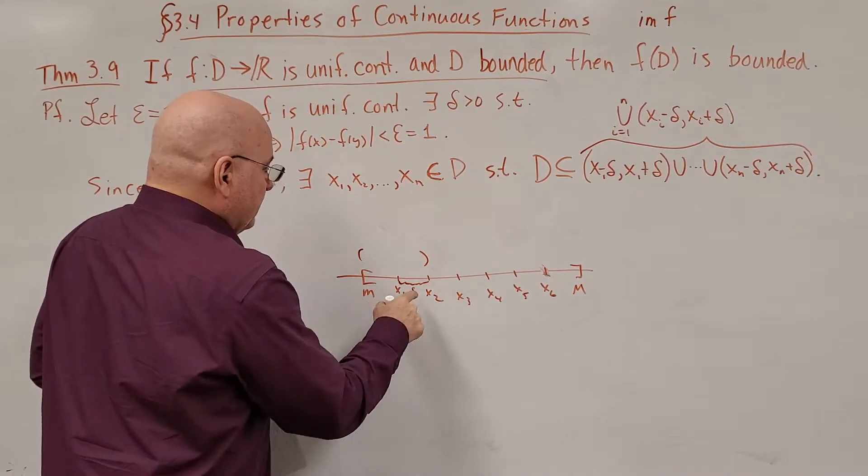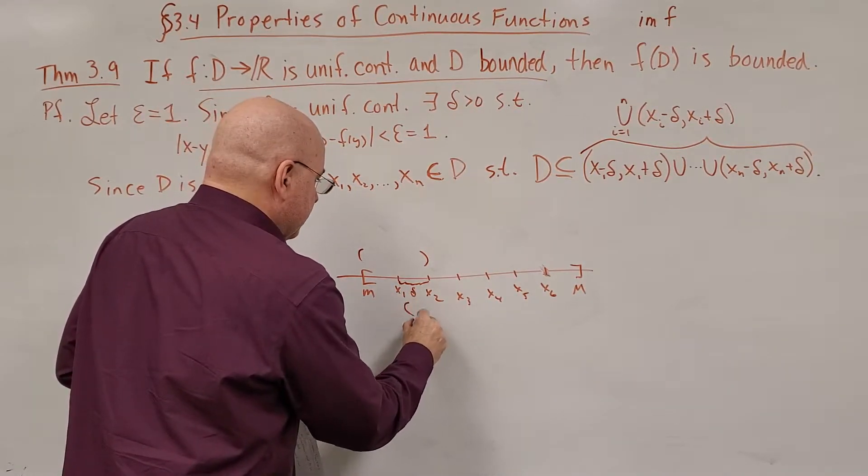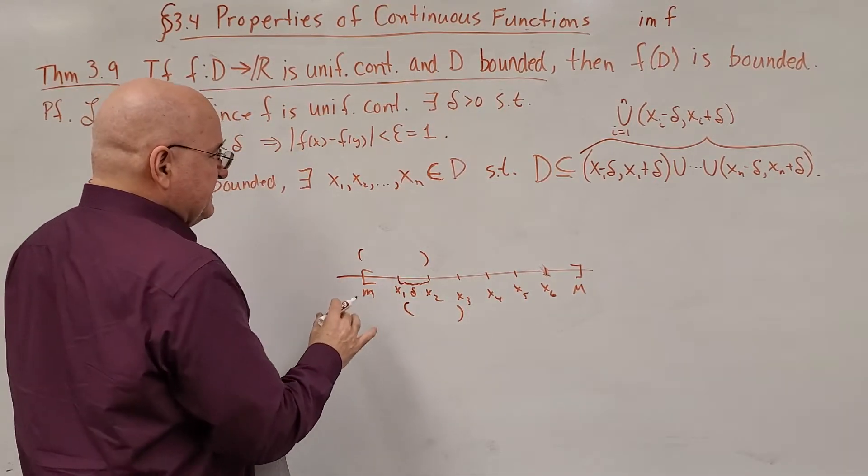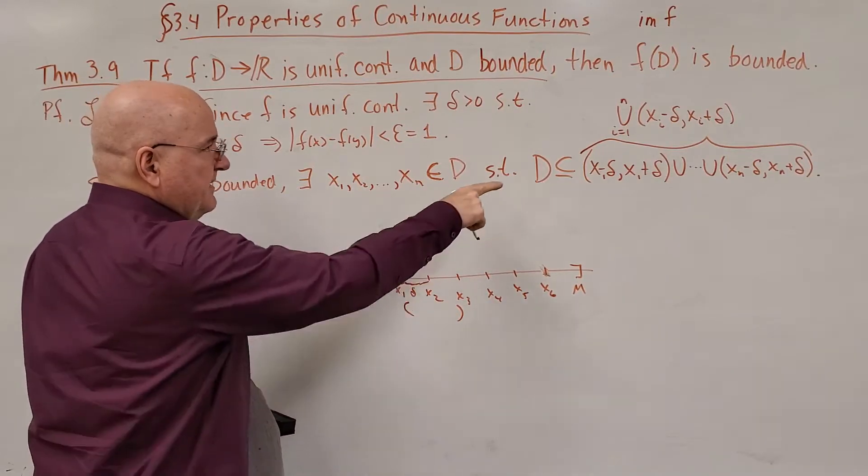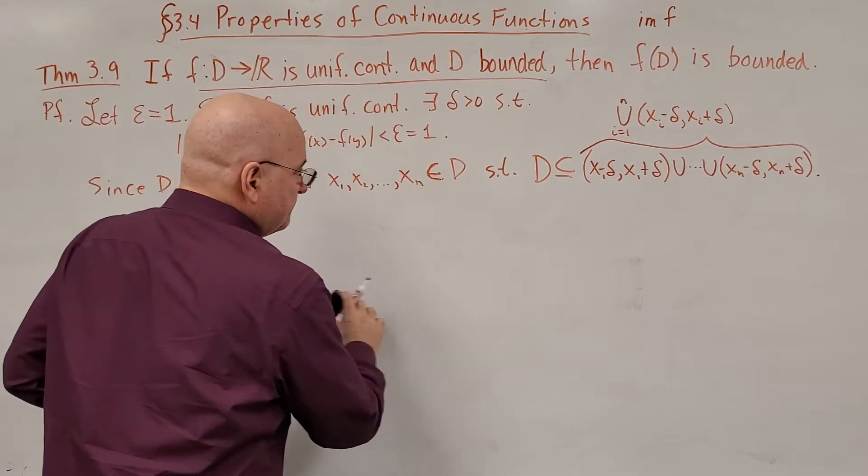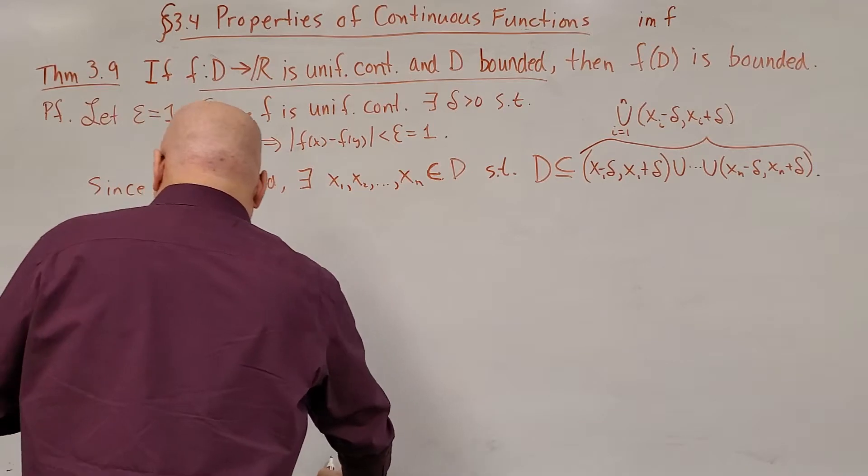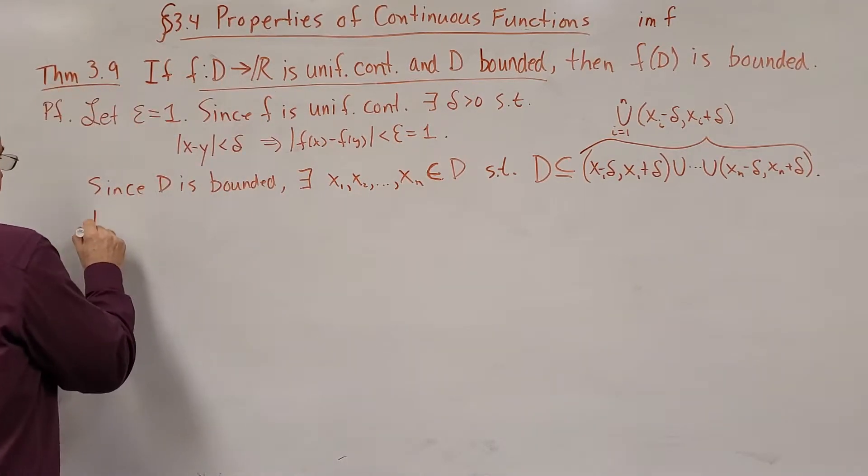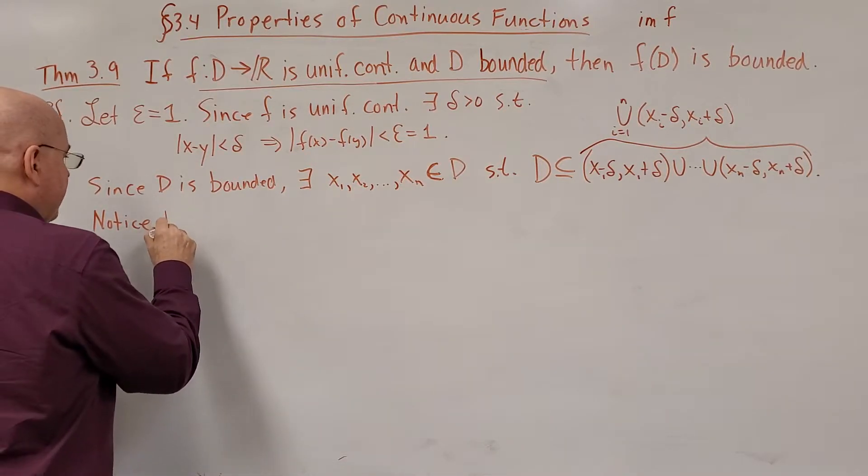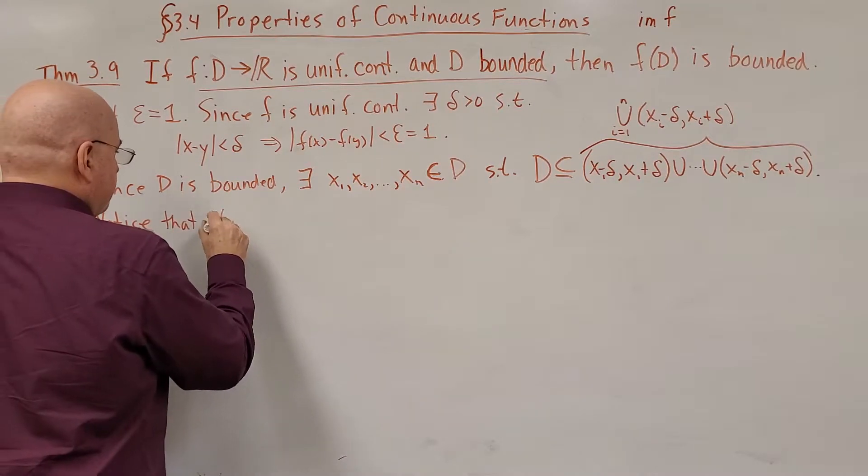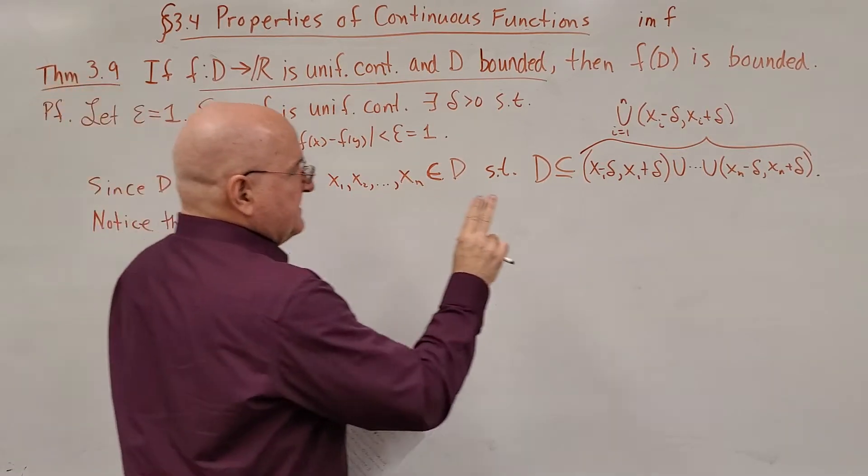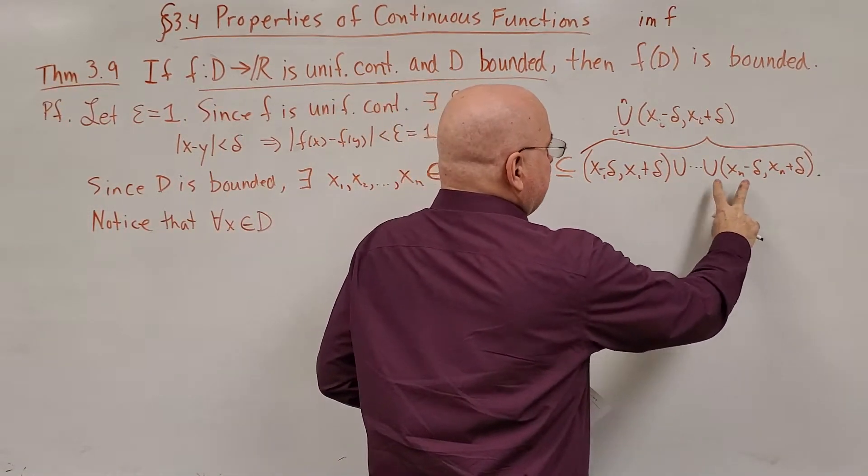So that's why we're able to make that statement. Let me, before I erase this, notice what x₂ plus or minus delta would be. It would be that interval. So they're overlapping, which is fine. But the set D is going to be completely contained in that union of those intervals. All right. Well, let's see what that means. Notice that for every x in the domain, for every x in the domain, it's going to, the x will fall into one of these intervals.